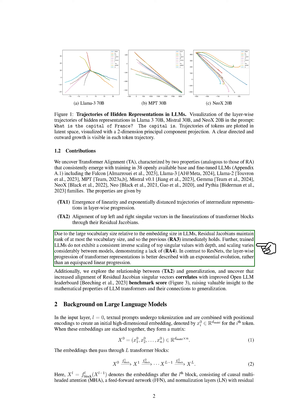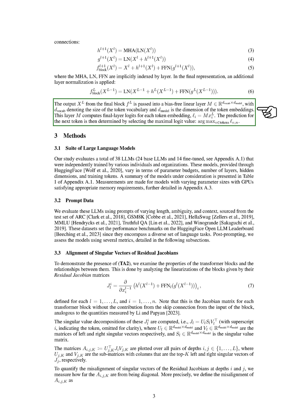In the input layer, denoted as L equals 0, text prompts are tokenized and combined with positional encodings to create a high-dimensional embedding. These embeddings form a matrix that goes through L transformer blocks successively. Each block consists of multi-headed attention, a feed-forward network, and normalization layers with residual connections. The final block output is fed into a linear layer to compute logits for each token, and the next token prediction is based on the highest logit value.